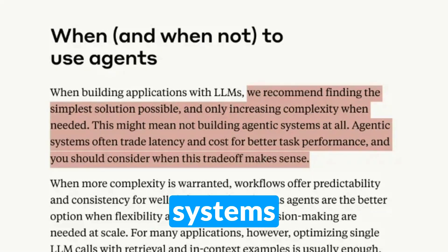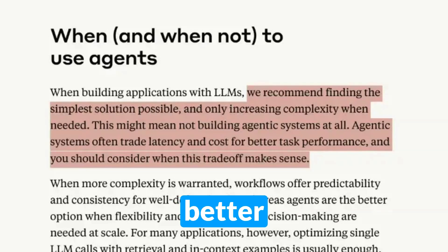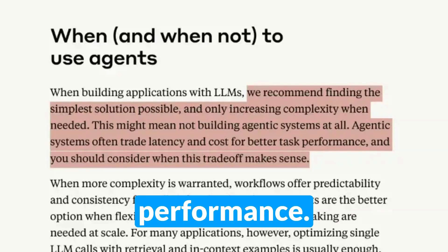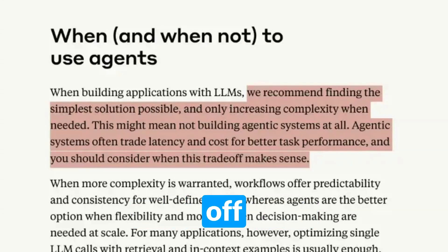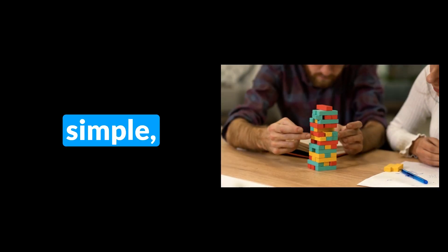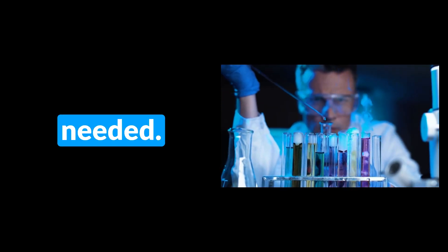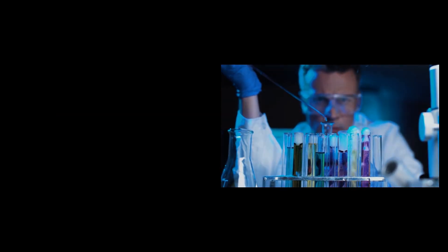Agentic systems often trade latency and cost for better task performance — consider when this trade-off makes sense. Basically, start simple, make it work, and increase complexity as needed. In my opinion, this is the most important philosophy in AI engineering.